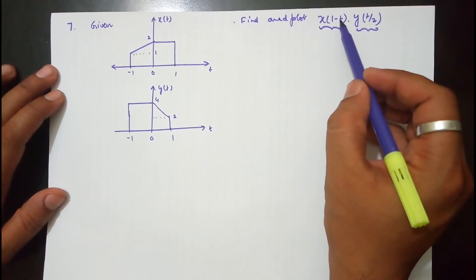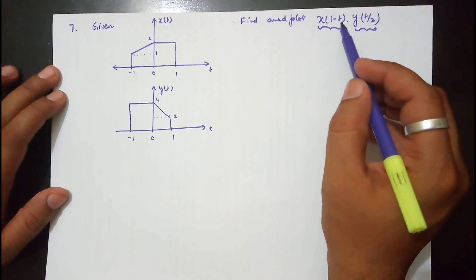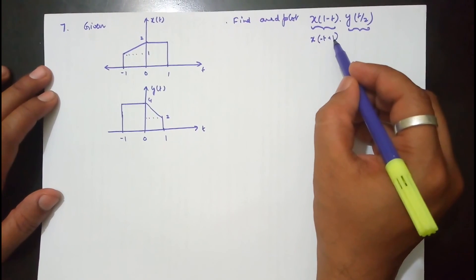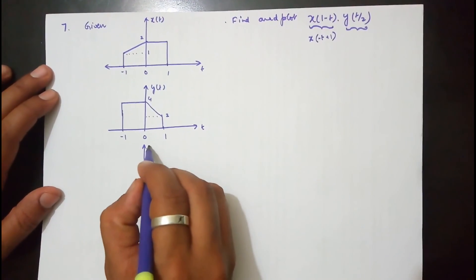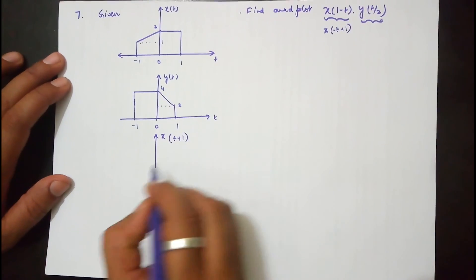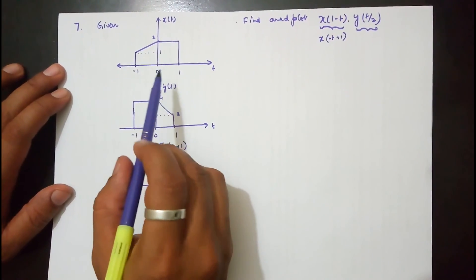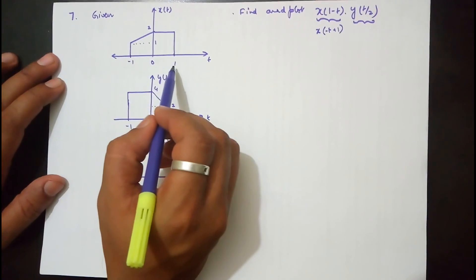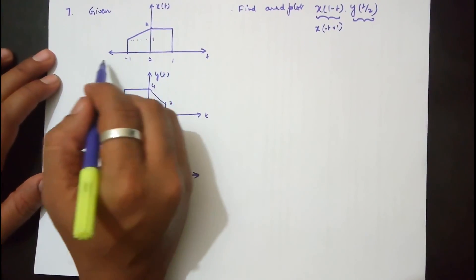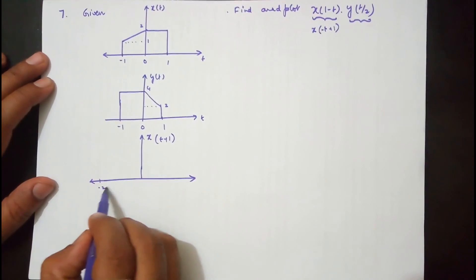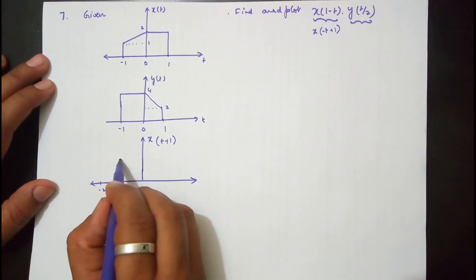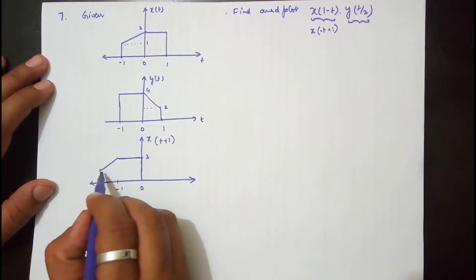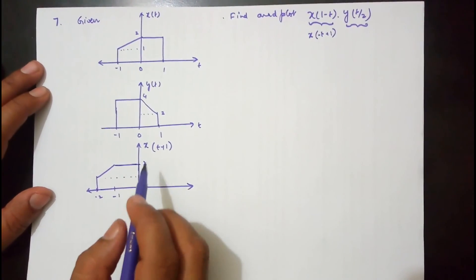What is x(1-t)? It is x(-t+1). By the law of precedence, shifting has to be done first, so we compute x(t+1) first, then take the reflection. x(t+1) is shifting x(t) left by 1. Since x(t) extends from -1 to 1, shifting left by 1 gives a waveform extending from -2 to 0, with amplitude 2 at t=-1 and amplitude 1 at t=-2. This is x(t+1).